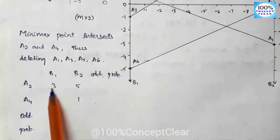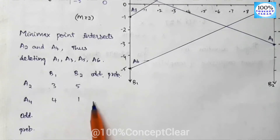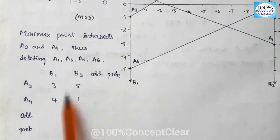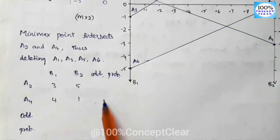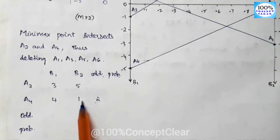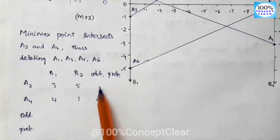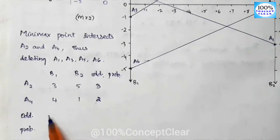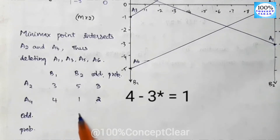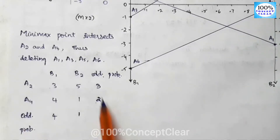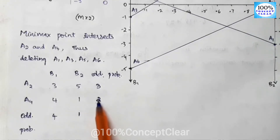Next we calculate the oddment and probability values. To find the oddment, we take cross-differences of the values. For A2 and A4: 5−3 = 2 (this is the oddment for A4's row) and 4−1 = 3 (this is the oddment for A2's row). Similarly, 5−1 = 4 and 3−2 gives the column oddments, accounting for negative signs: we get oddments of 2 and 3.